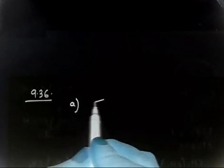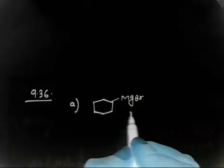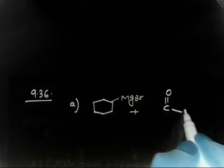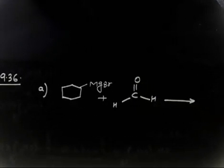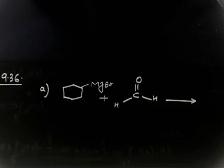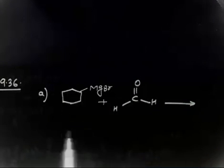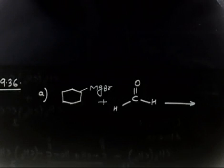So in part A, you have a Grignard reagent with MgBr. If this reacts with CH₂O (formaldehyde), you have C=O with H. What will be the product in this case? You have to write down the product after hydrolysis in all cases.